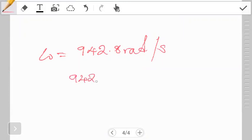I hope you did try it, and thumbs up to those who managed. Let's try to work it out together. So that is 942.8 radians per second. We want this in revolutions, so this is basically 942.8 rad per second, and then we want to multiply this to convert to revolutions.